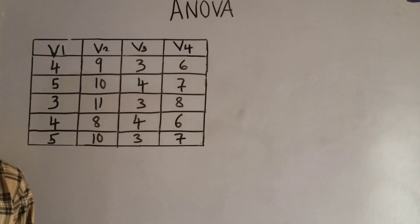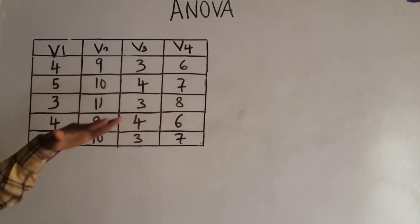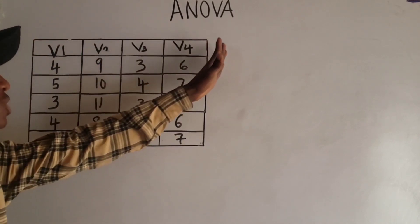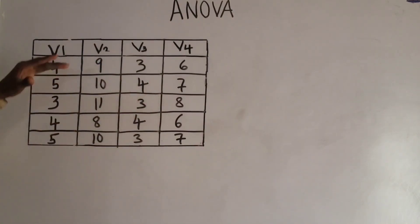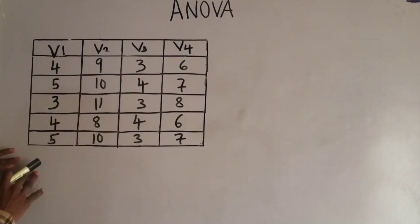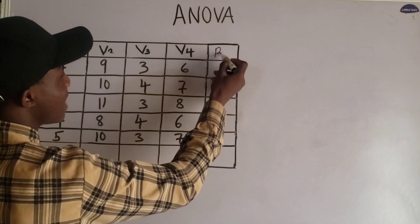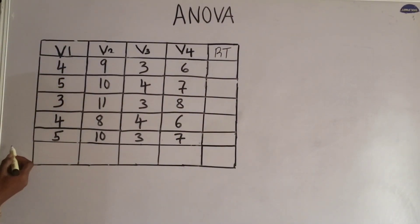To compute an ANOVA table for this data, the first step is to take the row total and the column total. The row total is the summation of each row, and I am going to have another column for that. The column total is the summation of each column, and I am going to have another row for that. Let me represent row total as RT and column total as CT.